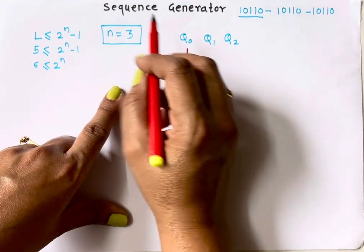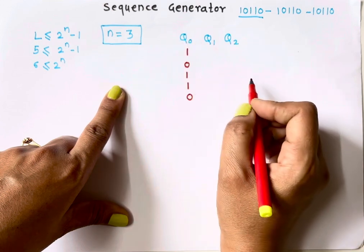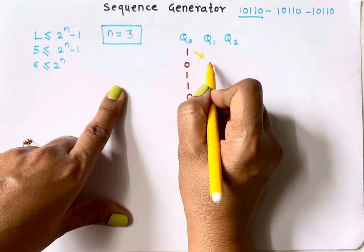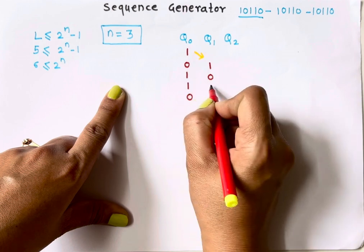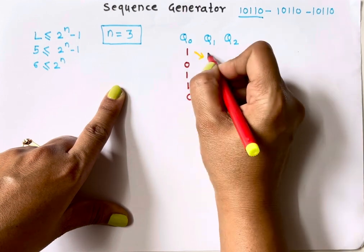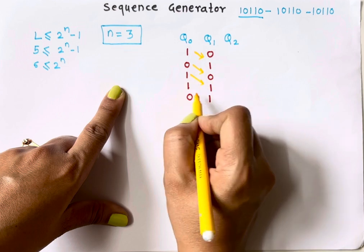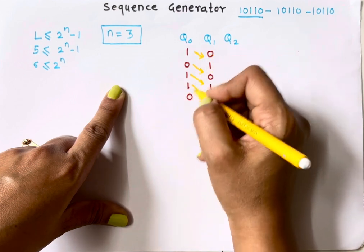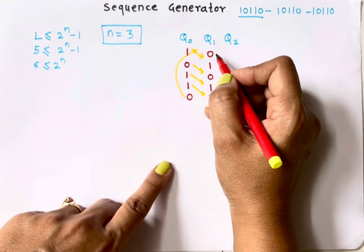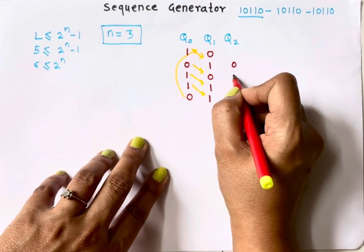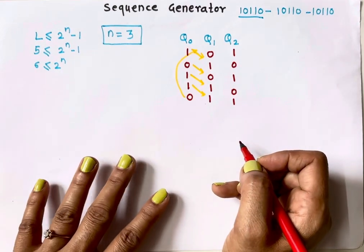Here I am designing the sequence generator using the shift register method. In a shift register, data shifts along: bit 1 comes first, then 0, 1, 1, and 0 follows. In the same way, data keeps shifting through each position. So these are the outputs of 3 flip-flops after each shift.